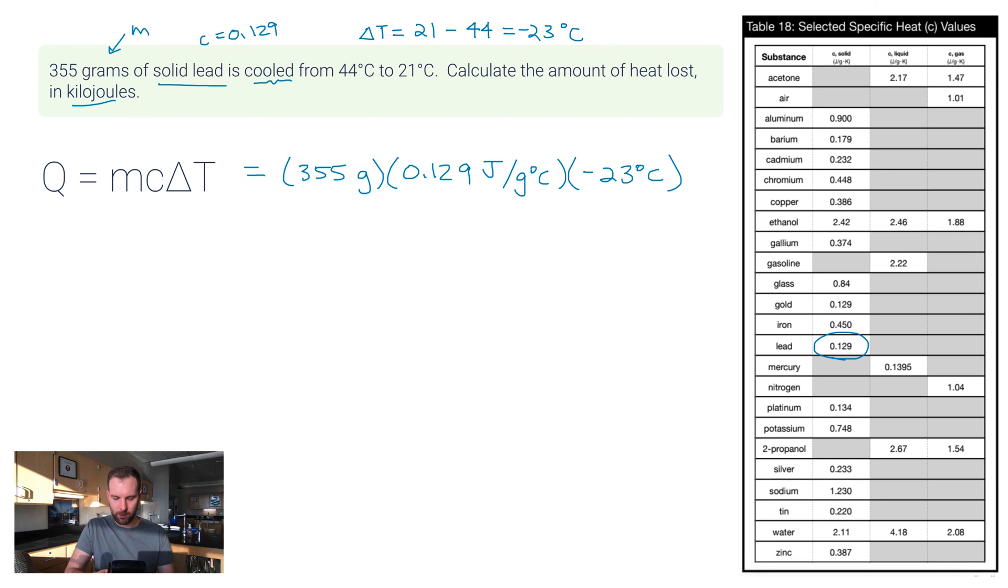So let me calculate this. 355 times 0.129 times negative 23 gives me negative 1053. Let me just show you what my calculator is giving me. Negative 1053, which to two significant figures here I'd want to make this negative 1100. Now I know that sounds terrible, but it's because this temperature reading only has two significant figures in it. So a way to make this more accurate is to get a better thermometer. But negative 1100, and this would be joules because look, grams cancels, degrees Celsius cancels.